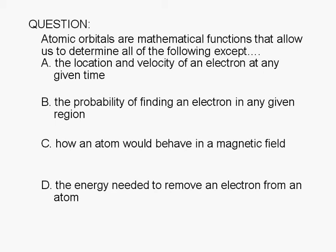Atomic orbitals are mathematical functions that allow us to determine all of the following except: A, the location and velocity of an electron at any given time,